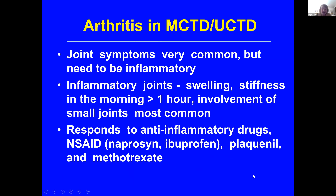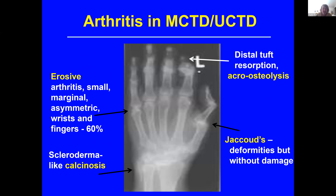Arthritis in MCTD is very common, but it really has to be inflammation and not just joint pain. Inflammation means swelling or stiffness in the morning in the fingers lasting for more than an hour, most commonly in the finger joints, maybe the toe joints and the knees. It responds very nicely to anti-inflammatory drugs like naproxen, ibuprofen, Celebrex. We often use Plaquenil, which is a very common drug in lupus, as well as methotrexate, which is one of our most common drugs for all inflammatory arthritis.